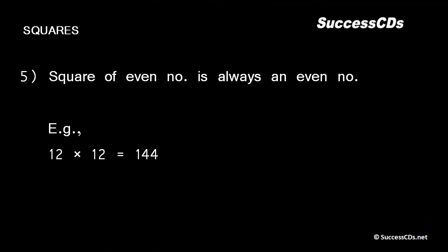The square of an even number is always an even number. For example, 12² = 144 and 16² = 256, which are both even numbers.